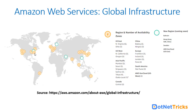North Virginia has the maximum number of availability zones. We will come back to the discussion of what regions and availability zones are. On the right side of the screen, different geographies list their regions: US East has North Virginia with six availability zones, Ohio with three, US West North California with three, and Oregon with three availability zones.